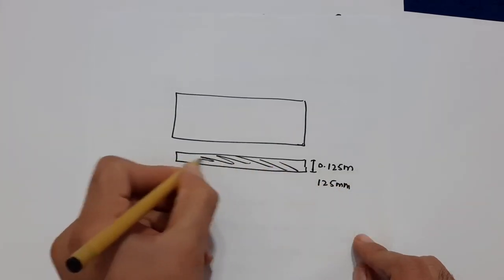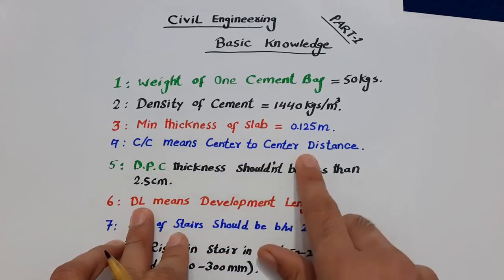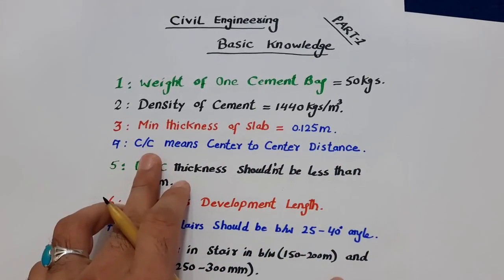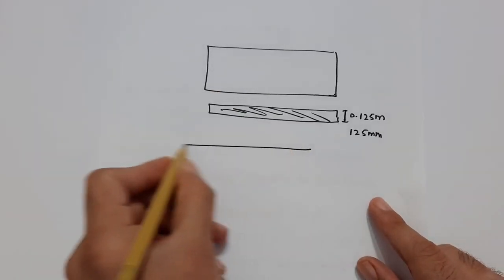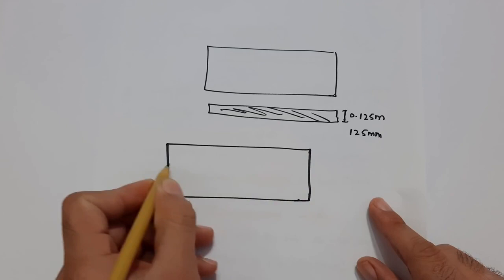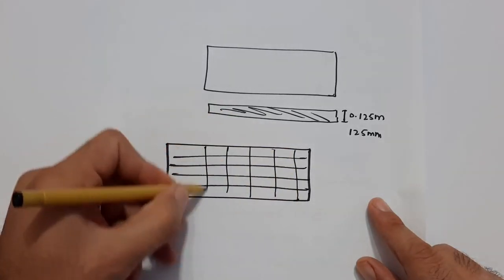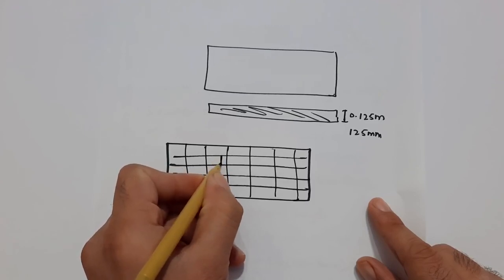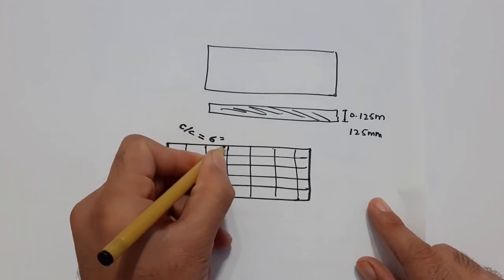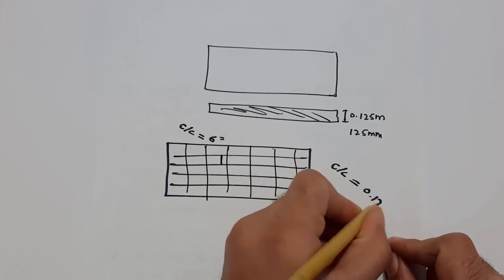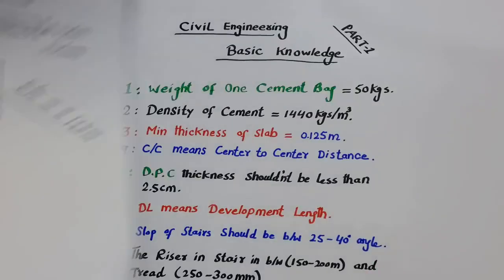The fourth one is C/C, which means center-to-center distance. We use C/C especially in steel structure design for slabs or any RCC member. As you can see, in a slab we provide main bars and distribution bars, and the spacing between two steel rods is expressed as C/C — for example, 6 inches, or C/C equal to 0.125 meter.